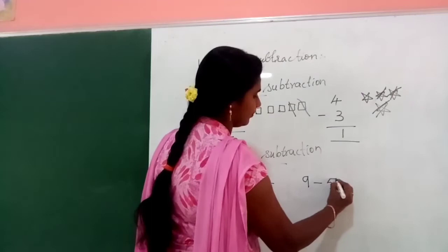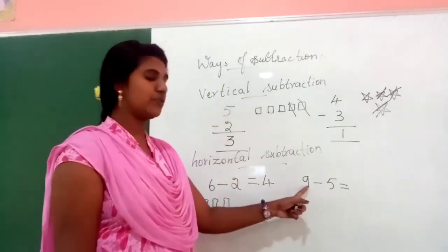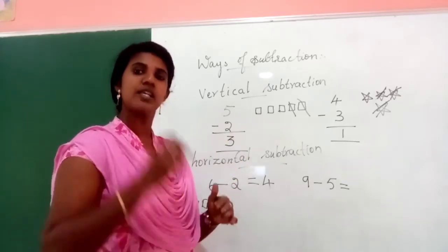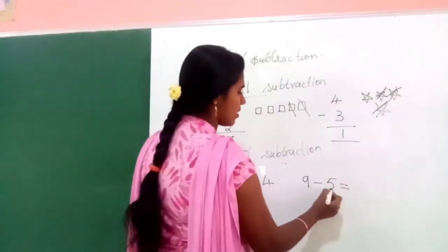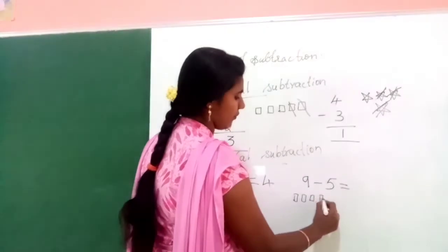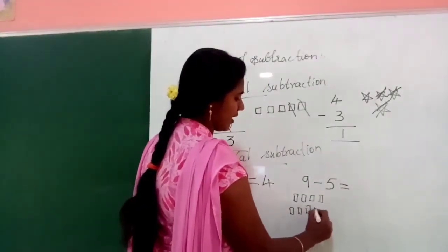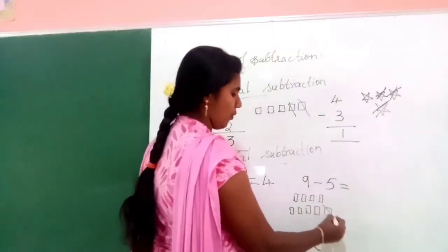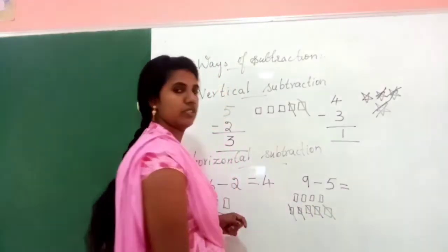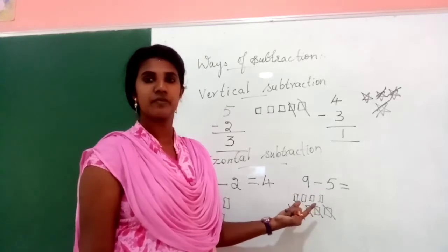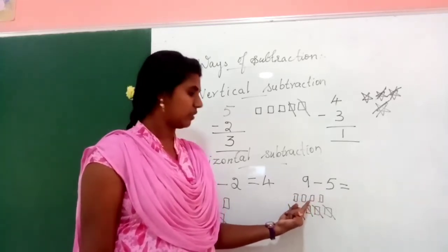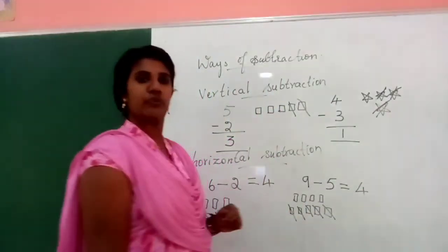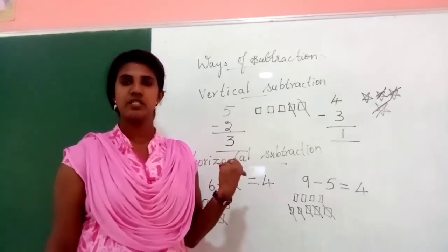One more example: 9 minus 5. We need to draw 9 boxes and cut 5. Draw 9 boxes: 1 through 9. Cross out 5 boxes. What is the remaining? 1, 2, 3, 4. So the answer is 4. We write 4. Are you clear? Are you understood?